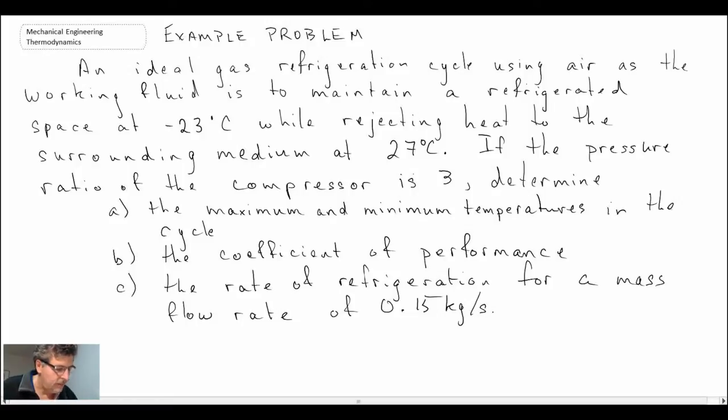There's the problem statement that we're dealing with. We have an ideal gas refrigeration system maintaining our space at minus 23 degrees Celsius. The surrounding medium is at 27 degrees Celsius, and the pressure ratio in the compressor is 3.